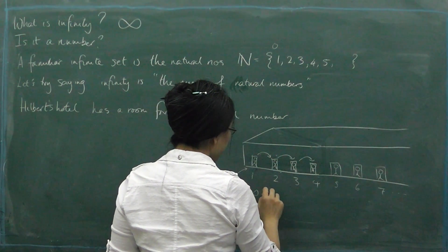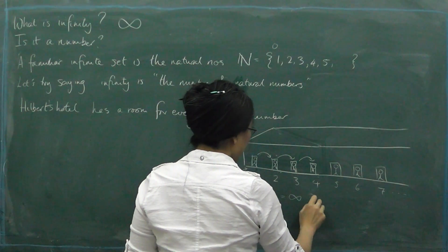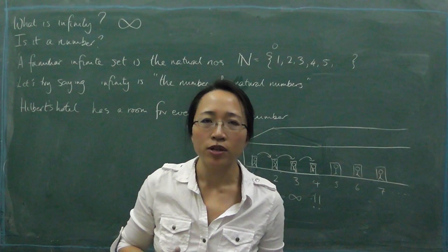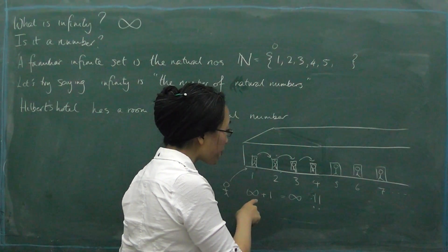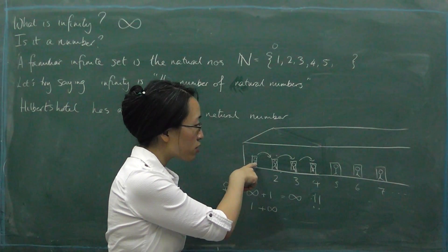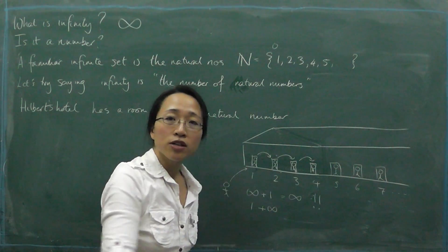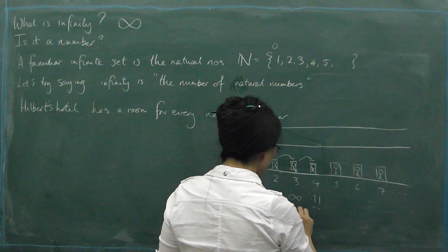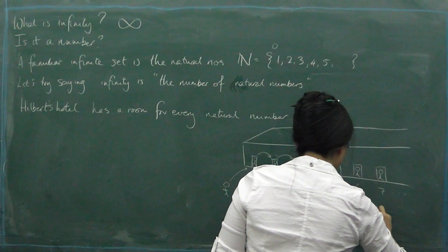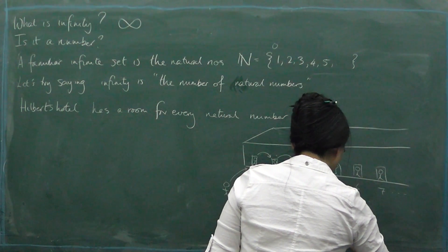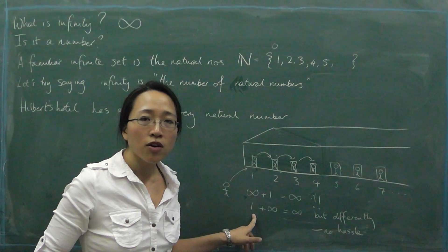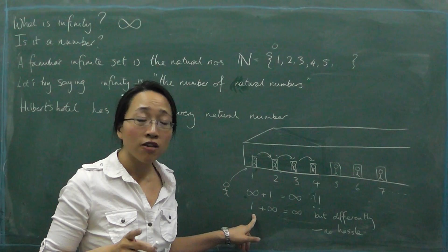So what have we just done? We've shown that infinity plus one equals infinity. But here's a subtle point: if the one person arrived first — one plus infinity — then the first person could just go in the first room, and the infinite people who arrived afterwards could fill all the remaining rooms. Nobody would have to move. So this also equals infinity, but differently — without any hassle. Infinity plus one equals infinity with a hassle; one plus infinity equals infinity with no hassle.